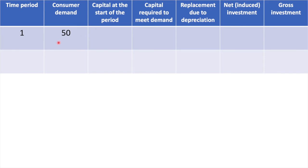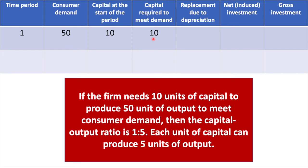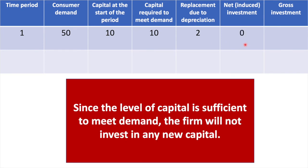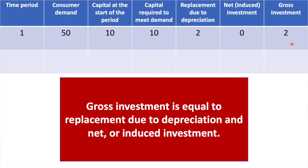In the first year, consumer demand is equal to 50 units. The total level of capital at the start of the period is 10 units, and the capital required to meet demand is also 10 units. If the firm needs 10 units of capital to produce 50 units of output, the capital output ratio is 1:5, since each unit of capital can produce 5 units of output. We assume the firm replaces 2 machines per year as they depreciate. Since the level of capital is sufficient to meet demand, the firm will not invest in any new capital. Gross investment equals 2 units (replacement) plus 0 (net investment), giving a total of 2 units.